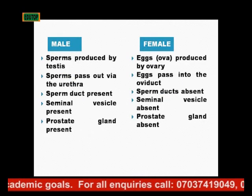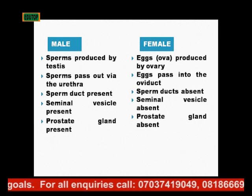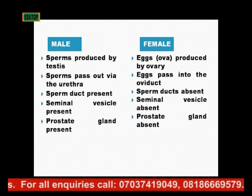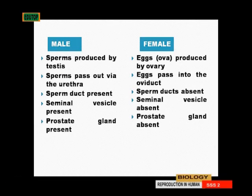Sperm are produced by the testes in the male, while eggs are produced by the ovary in the female. In the male, sperm pass out via the vas deferens; in the female, eggs pass into the oviduct or fallopian tube. The vas deferens is present in the male but absent in the female. The seminal vesicle is present in the male but absent in the female.